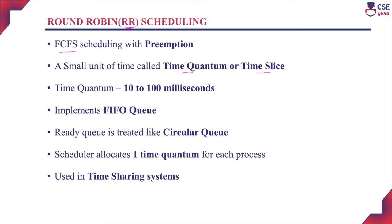The next process also will execute only for the specified time quantum and then leave the CPU for the next process in the job queue. Likewise, in FIFO order, each process will be selected and assigned to the CPU and will execute only for the time quantum. Once a process's burst time is over, it will leave the job queue. Usually, the time quantum is 10 to 100 milliseconds. The Round-Robin scheduling algorithm maintains a FIFO queue — whichever process enters the job queue first will be assigned to the CPU first.